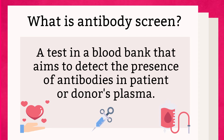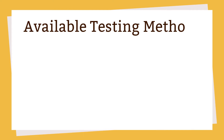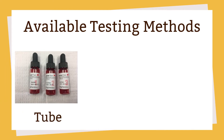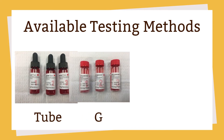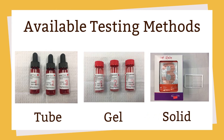What are the testing methods available for antibody screen tests? Tube method has been the gold standard for decades before more sensitive methods were developed. Other methods are gel column agglutination and solid phase technology. In general, solid phase is the most sensitive method, followed by gel and tube. Even though solid phase is the most sensitive method so far, other methods have their own benefit in the antibody identification process. We are focusing on gel method today.